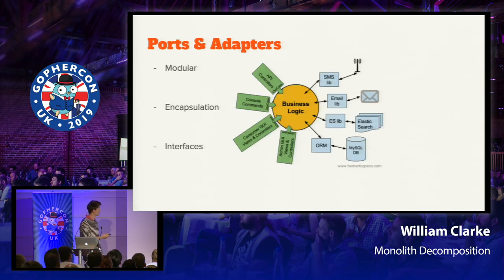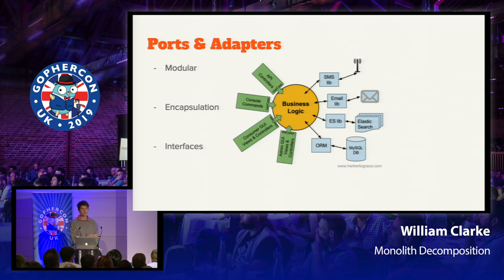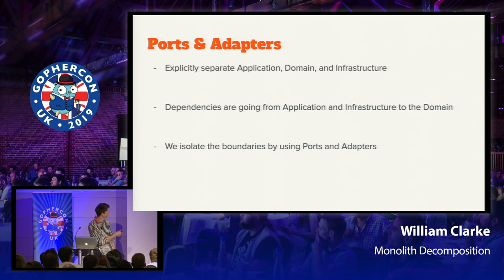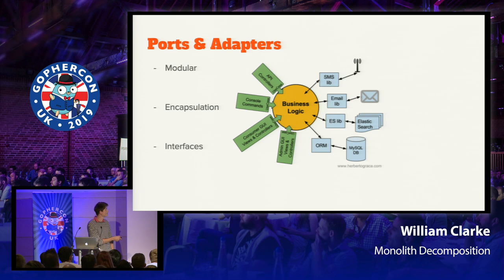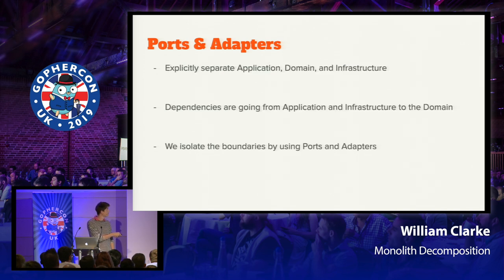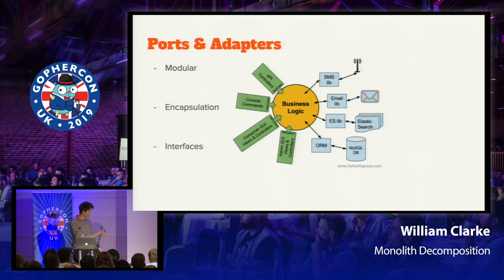We also looked into hexagonal architecture — ports and adapters — which is a really nice way of solidifying different engineering principles. Looking at the picture, it looks modular: you've got things connecting in through interfaces, quite encapsulated. Ports and adapters separates domain business logic from other logic, and importantly the dependencies go inwards. You've got your business logic in the center, which doesn't depend on anything — it just knows how to do its stuff. Ports and adapters can isolate boundaries, and we used this and it worked really well. The dependency direction is a really powerful thing.